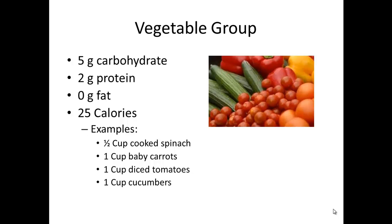The vegetable group has 5 grams of carbs, 2 grams of protein, no fat, and 25 calories per serving. You can look at a database to determine the serving size. Generally it's a half cup of cooked vegetables or one cup of raw.